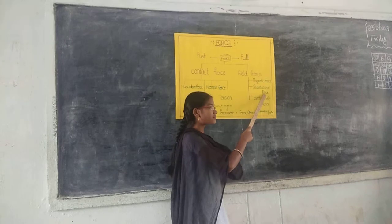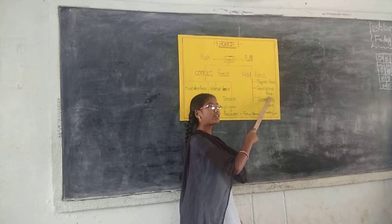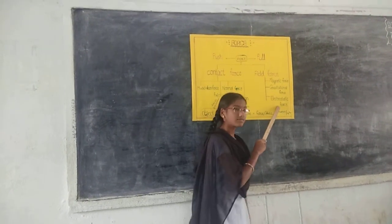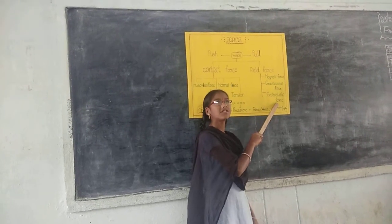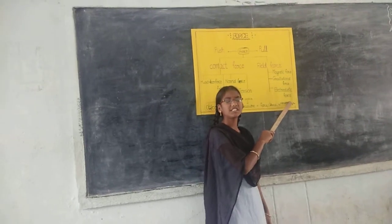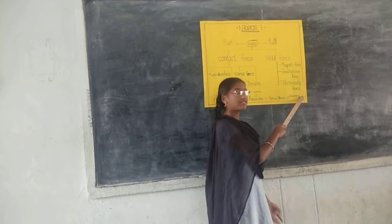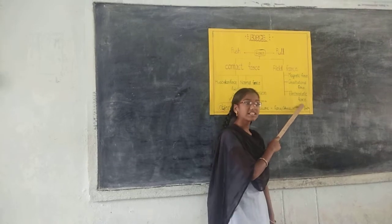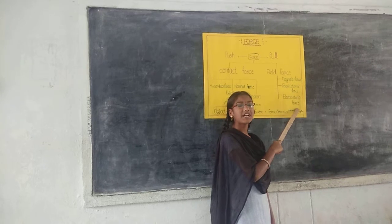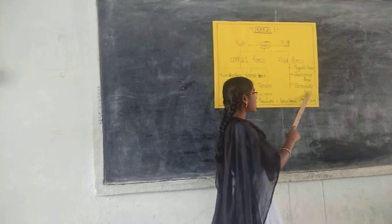An example of gravitational force is a fruit falling from a tree. Electrostatic force: when a charged body attracts another charged body, it is called electrostatic force. Example: an inflated balloon rubbed with silk cloth attracts paper and bits of leaves — this is called electrostatic force.